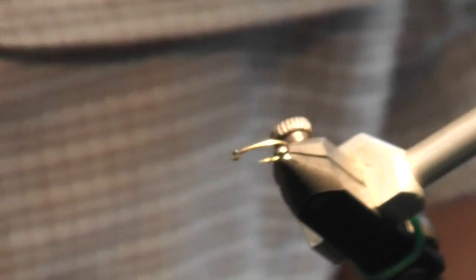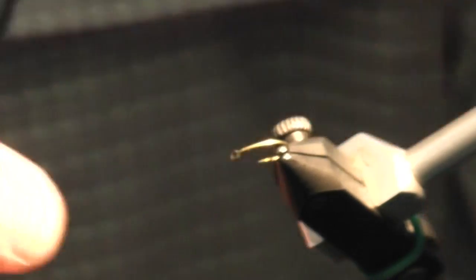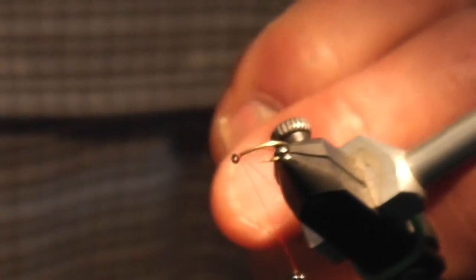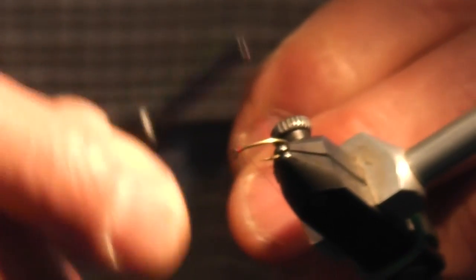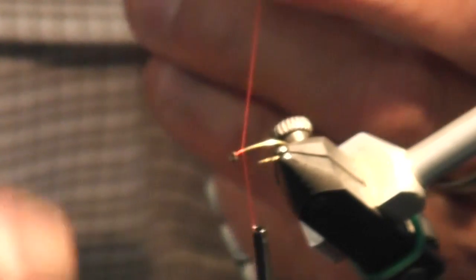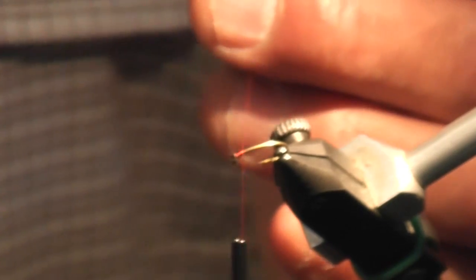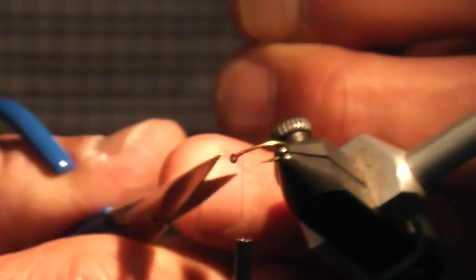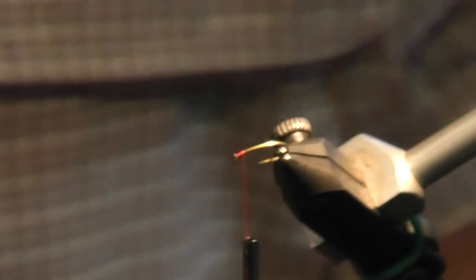I'll start off with the red thread, making eight turns. When going side by side, I use the edge of the thread to keep everything aligned without overlapping. Then I snip off the end.